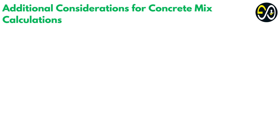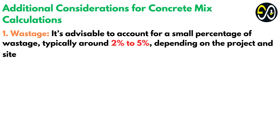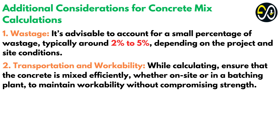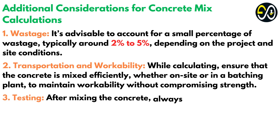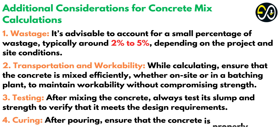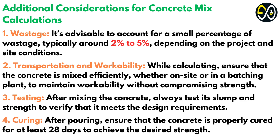Additional considerations for concrete mix calculations. Wastage: it's advisable to account for a small percentage of wastage, typically around 2% to 5%, depending on the project and site conditions. Transportation and workability: while calculating, ensure that the concrete is mixed efficiently, whether on-site or in a batching plant, to maintain workability without compromising strength. Testing: after mixing the concrete, always test its slump and strength to verify that it meets the design requirements. Curing: after pouring, ensure that the concrete is properly cured for at least 28 days to achieve the desired strength.